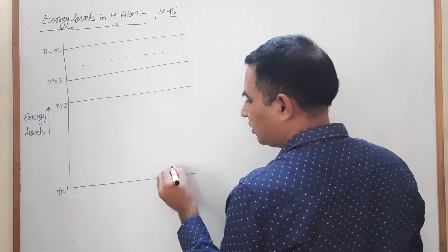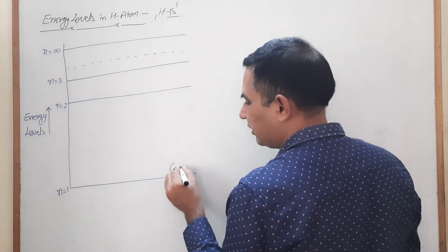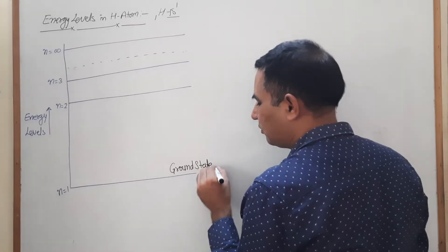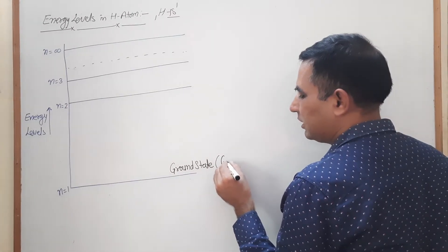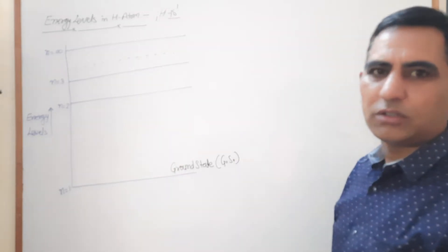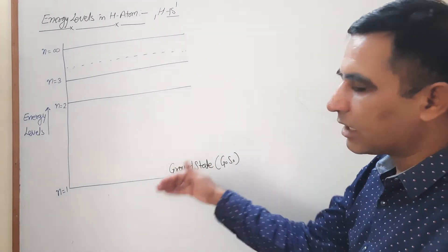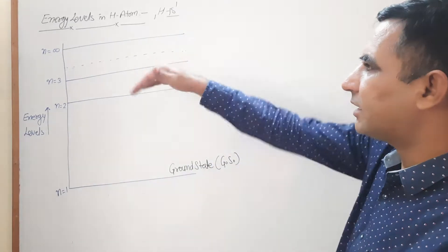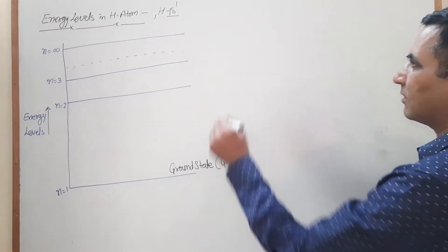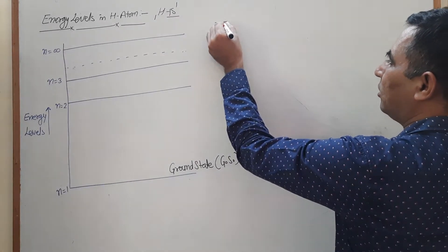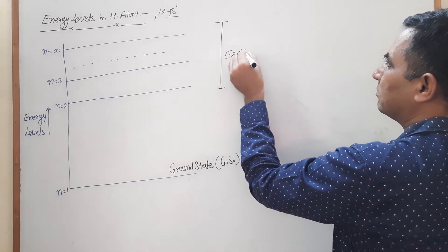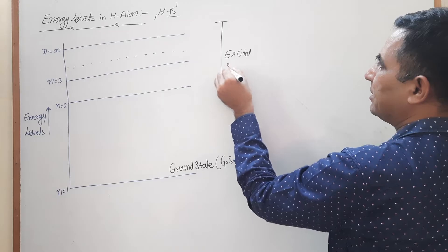This stage of energy, where the electron is in the first orbit, is known as the ground state — in short, GS. This is the ground energy level. Except the ground state, all the remaining energy levels are known as excited states.